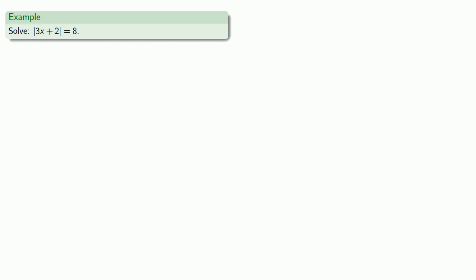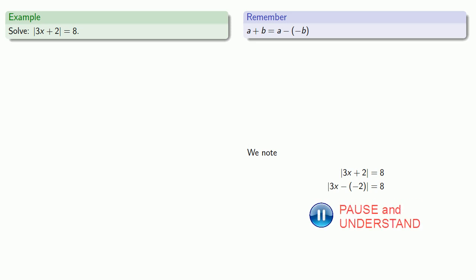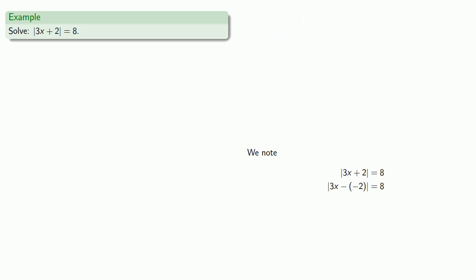How about something like this? One important thing: if you read this equation, you read it as the absolute difference of 3x plus 2, at which point you say, wait — that's not a difference, that's a sum. Well, actually it is, it's just not obviously a difference. This relies on the property a plus b equals a minus negative b. So 3x plus 2 can be rewritten as 3x minus negative 2. Now this is an absolute difference, and we can read it as saying the distance between 3x and negative 2 is 8.